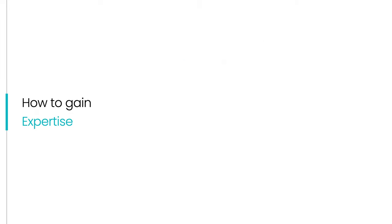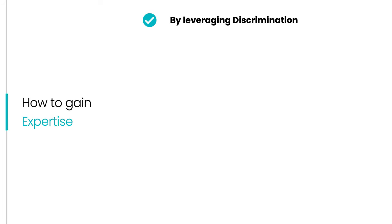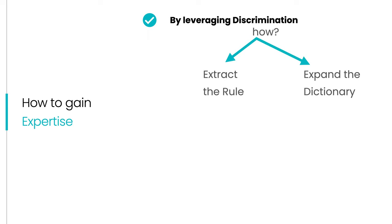Since expertise implies the ability to solve different problems, how might we achieve this goal? Well, the answer is by strengthening our discrimination skills. Discrimination skills require the ability to extract the rule and an expanded conceptual dictionary.